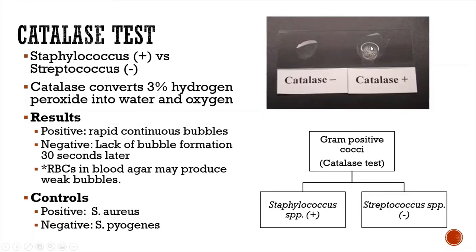The positive result shows rapid continuous bubbles or effervescence, as seen in the upper right corner. The positive control for the catalase test is Staphylococcus aureus; the negative control is Streptococcus pyogenes.